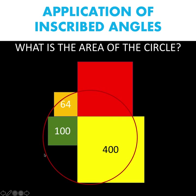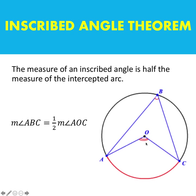Our goal is to find the area of this circle. In order to solve this problem, let's recall our inscribed angle theorem. When we have a circle with center at point O and we draw chord AB and chord AC such that point B is on the circle, then angle ABC is an inscribed angle. The inscribed angle theorem says that the measure of this inscribed angle is one-half the measure of the central angle AOC — in other words, half the measure of the intercepted arc AC.